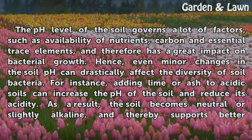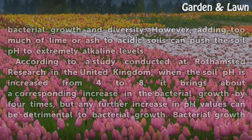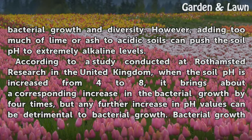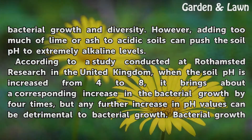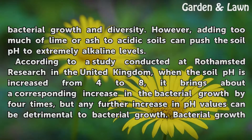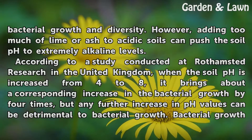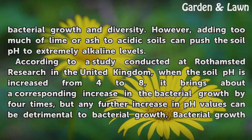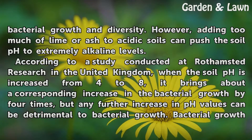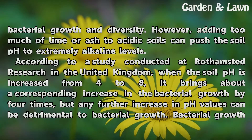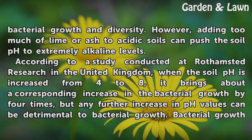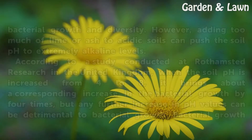As a result, the soil becomes neutral or slightly alkaline, and thereby supports better bacterial growth and diversity. However, adding too much lime or ash to acidic soils can push the soil pH to extremely alkaline levels. According to a study conducted at Rothamsted Research in the United Kingdom, when the soil pH is increased from 4 to 8, it brings about a corresponding increase in bacterial growth by 4 times, but any further increase in pH values can be detrimental to bacterial growth.